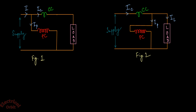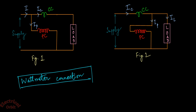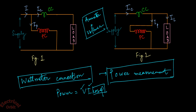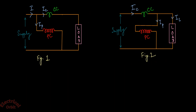Welcome. In this lecture we are going to understand wattmeter connection. A wattmeter is an instrument used for power measurement, and power equals voltage multiplied by current and power factor. If we simply include an ammeter and a voltmeter we get V and I, but not cos phi — for that we have to use a wattmeter specifically for AC power measurement.